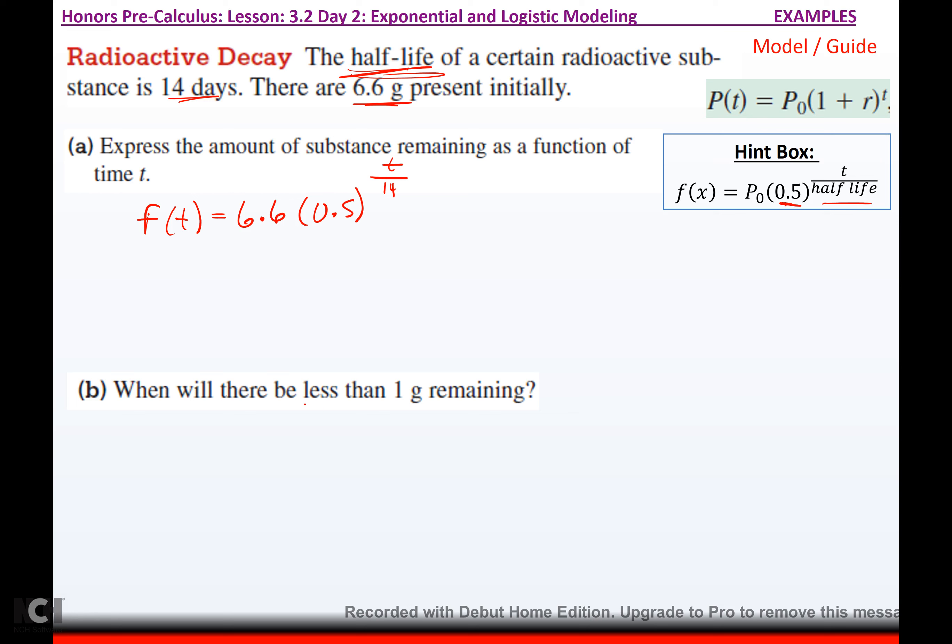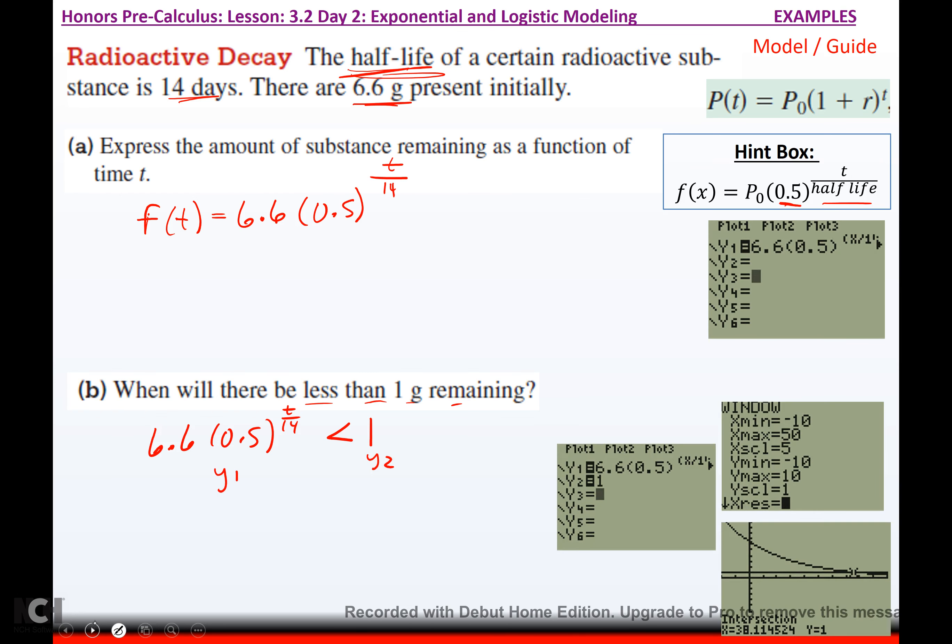And then it says, when will there be less than 1 gram remaining? So, now I'm trying to figure out when will 6.6 times 0.5 to the T over 14 be less than 1. So, this would be my Y1. This would be my Y2. If I type that in, there's my Y1. Y2 is 1. There's the window I set. And they cross that. Again, I can't do this using algebra because I have a variable in the exponent. So, it crosses when X is approximately 38 days. After about 38 days, there's going to start being less than a gram of the stuff remaining.